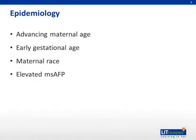The incidence of placenta previa is 1 in 300 deliveries. The incidence of previa in early gestational age is 5 to 15% of all deliveries, and prior cesarean section incidence is 1 to 4%. Other risk factors for placenta previa include advancing maternal age, early gestational age, male fetus, maternal race, and elevated maternal serum alpha-fetoprotein.